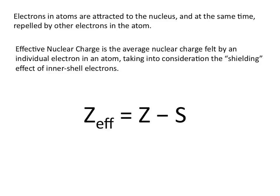The effective charge is equal to Z minus S, where Z is the number of protons in the nucleus and S is the number of inner shell electrons. The number of protons in the nucleus is the same as the atomic number and can be easily determined using your periodic table. In this tutorial, we'll go through how to determine the number of inner shell electrons.